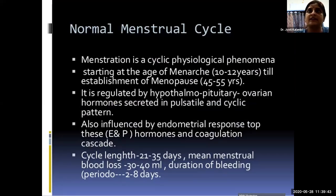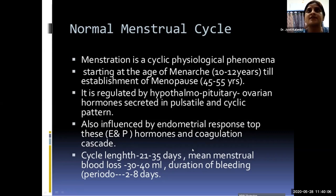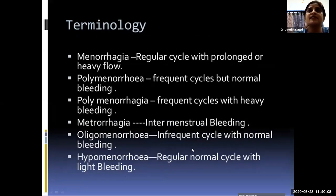The normal menstrual cycle starts at menarche around age 10–12 and lasts until menopause at 45–55 years. It is regulated by the HPO axis in a pulsatile and cyclic pattern, influenced by endometrial response to estrogen and progesterone hormones and the coagulation cascade. Cycle length has already been discussed.